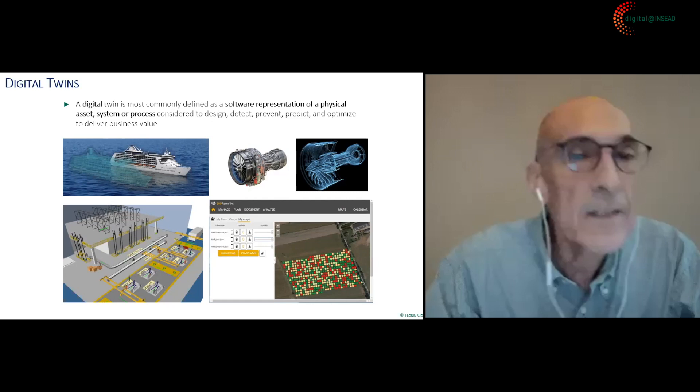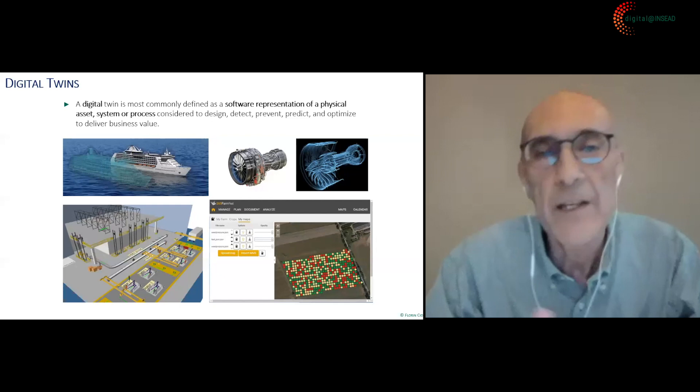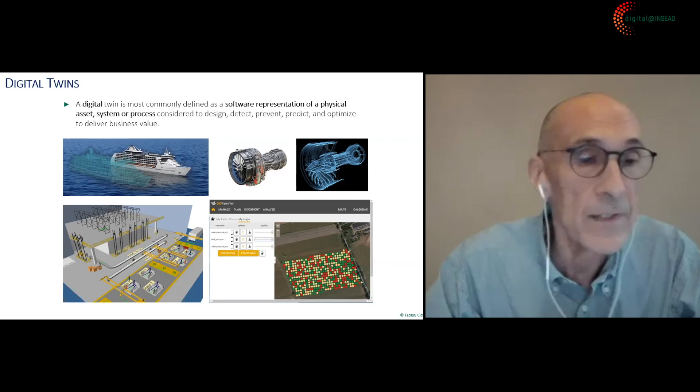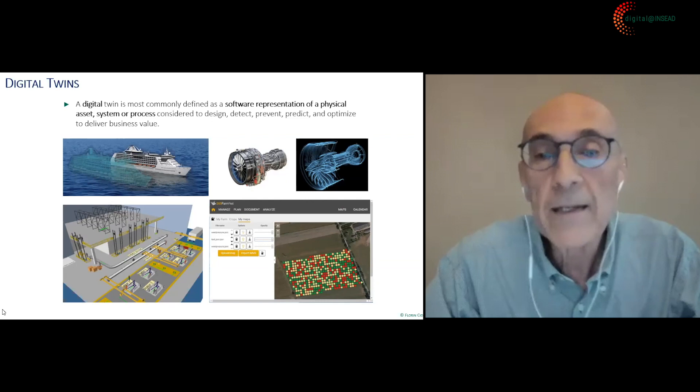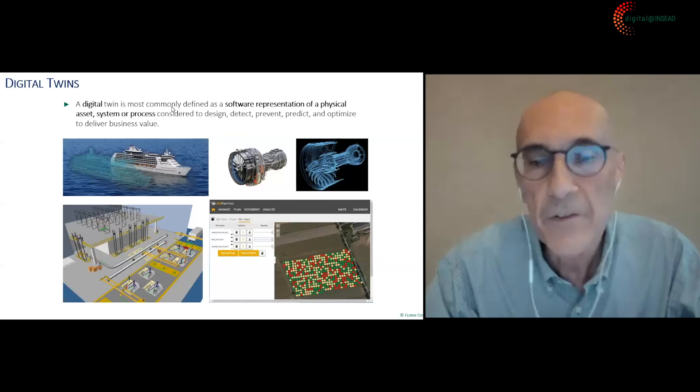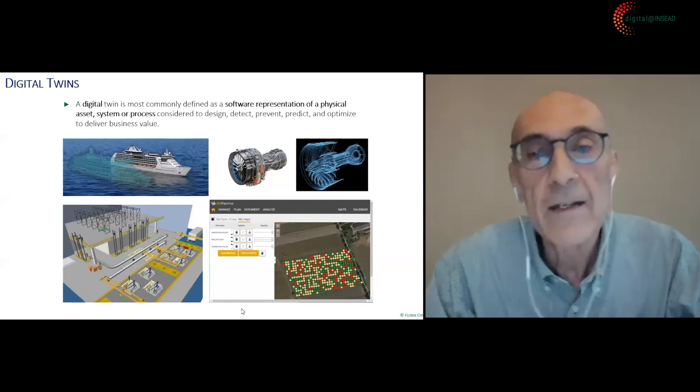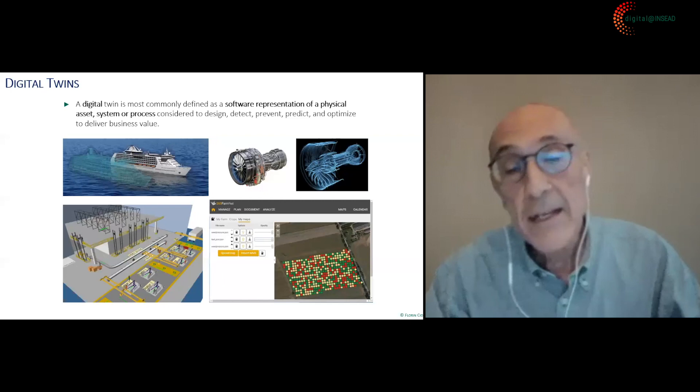When I talk about systems or processes, we typically think of man-made complex systems like a jet engine, a seafaring vessel, or a production and distribution system. But increasingly, we're also going into nature-made systems. For example, one can think of agricultural supply chains and fields, whereby using sensors and modern technology, we can build the digital twin of a field to do the exact same things we can with man-made systems.